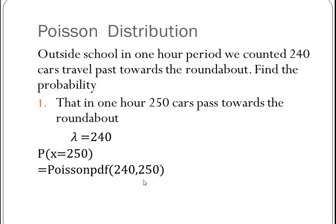Poisson, remember there's only two conditions, the lambda and the number you're after. So I want 240 cars as an average, and I want 250, and that gives me a probability of 0.0205.